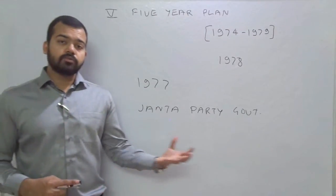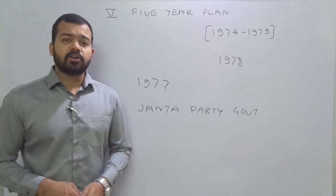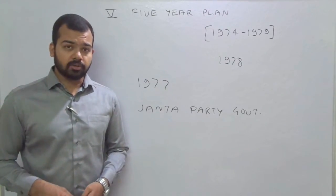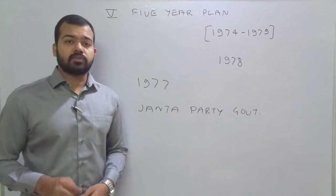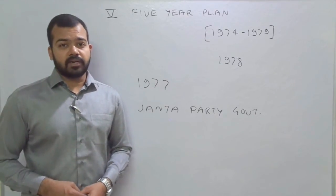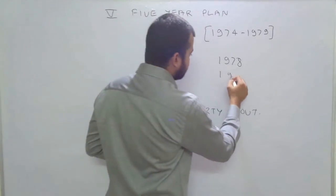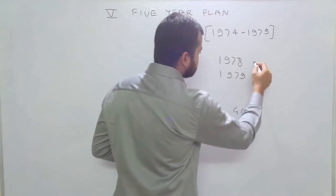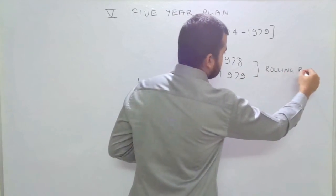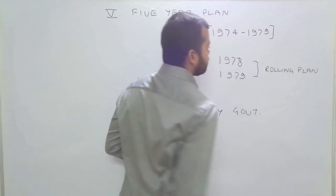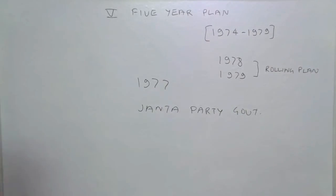The Janata Party was of the opinion that this plan was converting the Indian economy into a fully socialistic economy. So the main reason for discontinuation was the election loss of the Congress party led by Mrs. Indira Gandhi. The remaining 2-year period — 1978 and 1979 — was termed as a rolling plan.